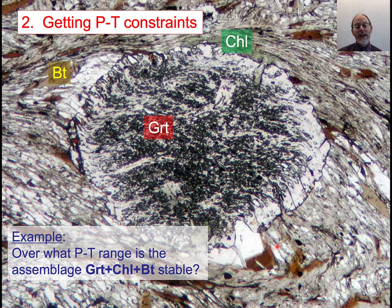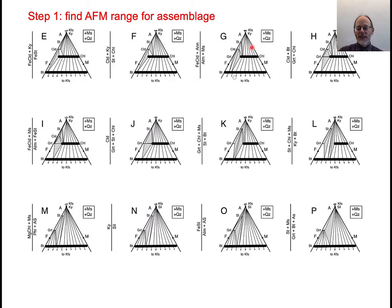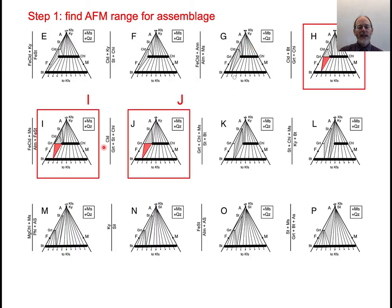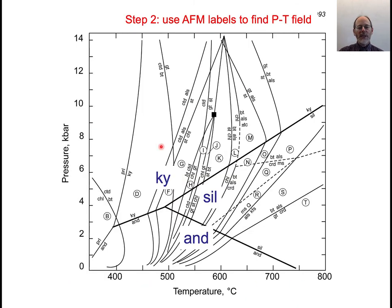One of the reasons that we care about AFM diagrams is that it gives you a sense of where you are in pressure-temperature space, especially with respect to temperature. For example, in a rock where biotite, garnet, and chlorite are all stable, that assemblage is stable only in diagrams H, I, and J. In PT space, H, I, and J are each a little sliver, so the assemblage garnet-biotite-chlorite should be stable only within this sort of banana-shaped region.